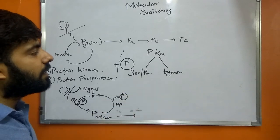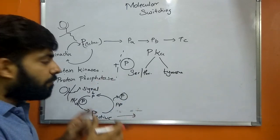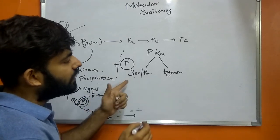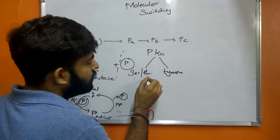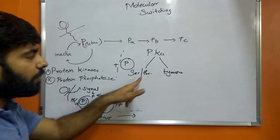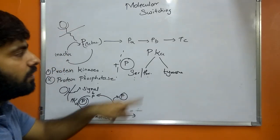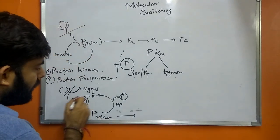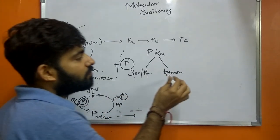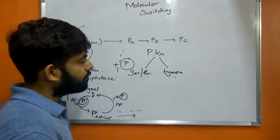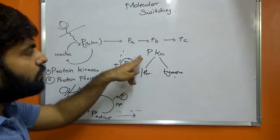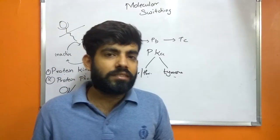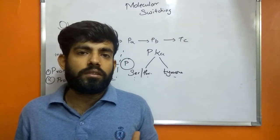Serine/threonine kinases are protein kinases which add the phosphate group to the serine or threonine region of the amino acid. Tyrosine kinase is the type of protein kinase which adds the phosphate group to the tyrosine region of the amino acid. A human genome consists of about two percent of the genome which encodes for protein kinases, and there are hundreds of different types of protein kinases responsible for intracellular signaling.